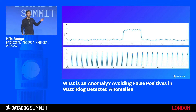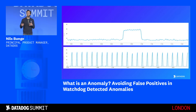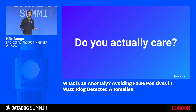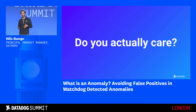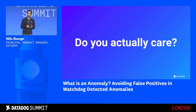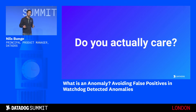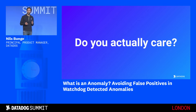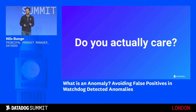But what if the historical data was flat and we then had this spike? It would mathematically be an anomaly, but would you actually care? That's the most critical question we had to answer when we developed the first version of Watchdog alerts, because we had thousands of mathematically valid anomalies every single day. So there was something more to take into account.